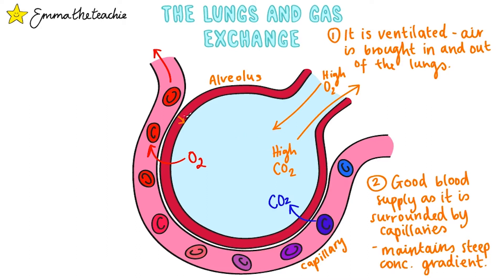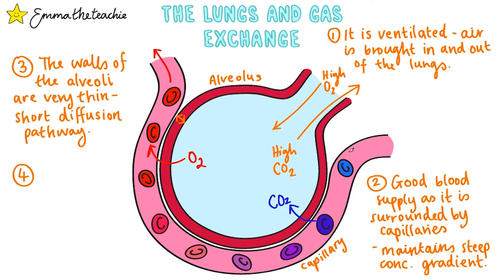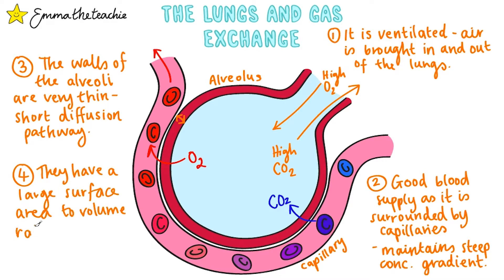Our third adaptation is that the walls of the alveoli are very thin, providing a short diffusion pathway between the air and the blood, so it's much faster. If we take a look at the shape of the alveolus, we can see it's a spherical shape and it's tiny, so they have a large surface area to volume ratio. This maximizes the rate of diffusion.